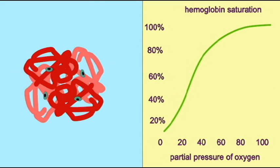In contrast, this steep slope one finds in the middle of this curve means that there is a significant difference between the amount of oxygen which will be delivered to a resting tissue and an active tissue.